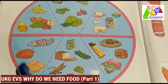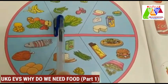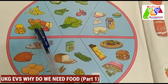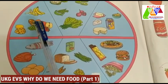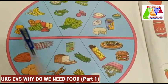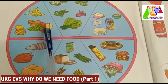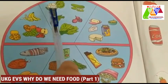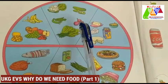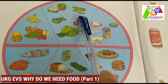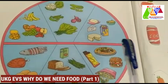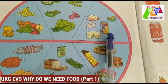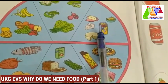In the first picture we can see some fruits — bananas, grapes, apples, oranges, strawberries, mangoes, etc. In the second picture we can see some vegetables — cauliflower, onion, cucumber, and more.